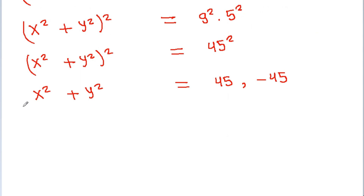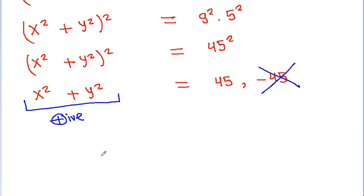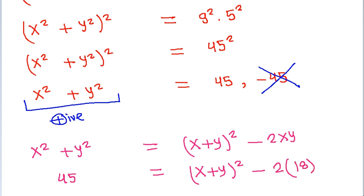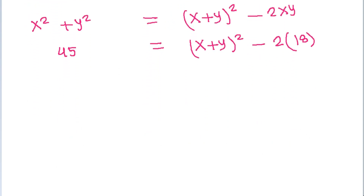So x squared plus y squared equals 45, taking the positive value. And we know x squared plus y squared equals x plus y, squared, minus 2xy, which is 45. So x squared plus y squared equals 45 plus 2 times 18.